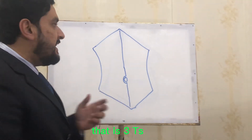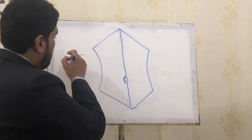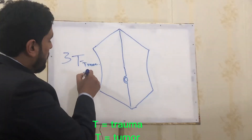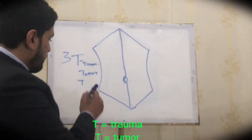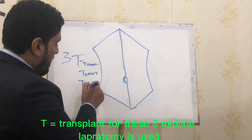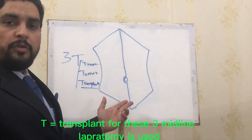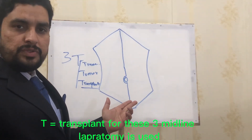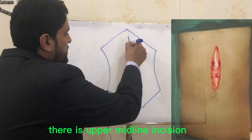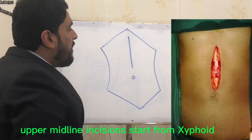For the midline laparotomy incision, you should learn a very specific mnemonic: 3T. 3T means Trauma, Tumor, Transplant. For these three indications, midline laparotomy is used. There is also an upper midline incision.